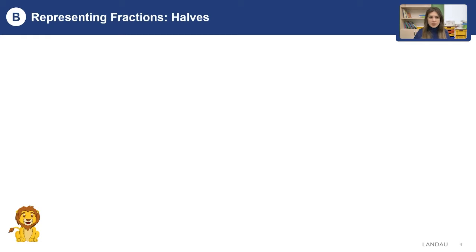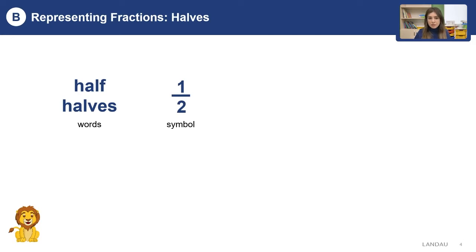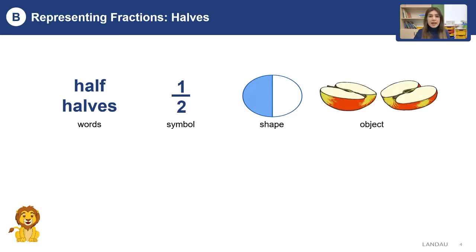Let's see the first part. The first part is half or halves. It is, as you know, written as a word. What about the second part? It is the symbol — one over two. This is the symbol and we will learn about it later. The third one is the shape and you can see the half part is blue. And look at the object part — it is an apple and you can see the half of the apple.